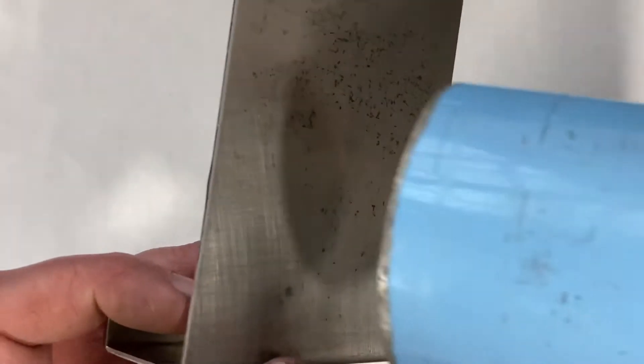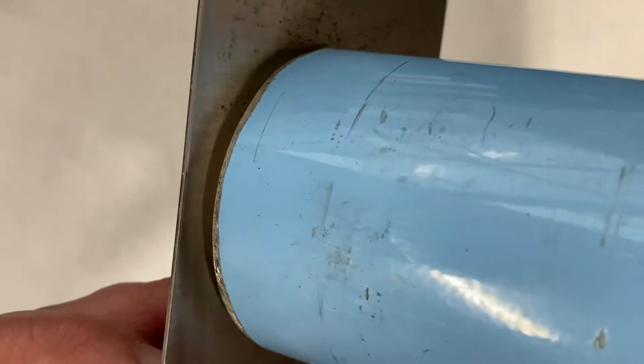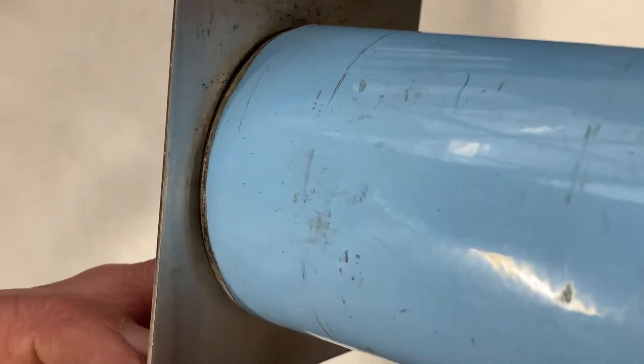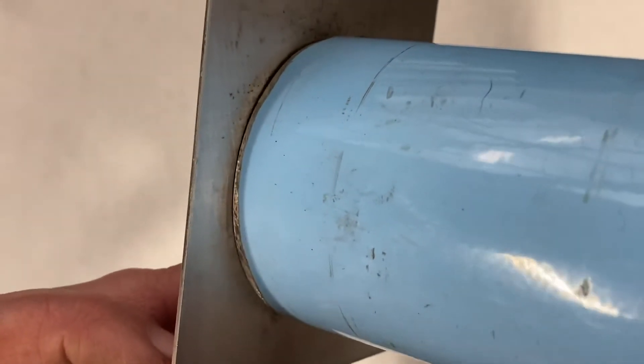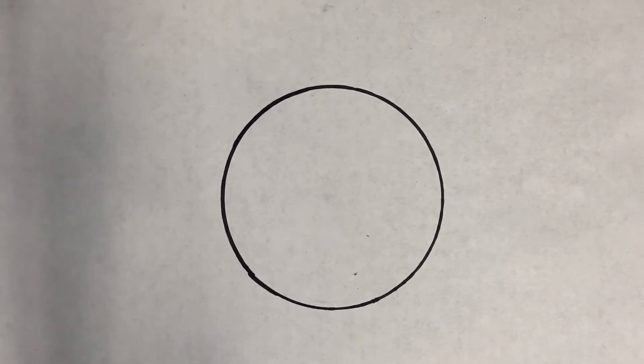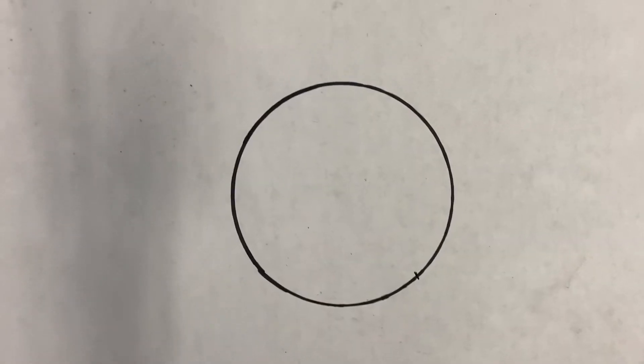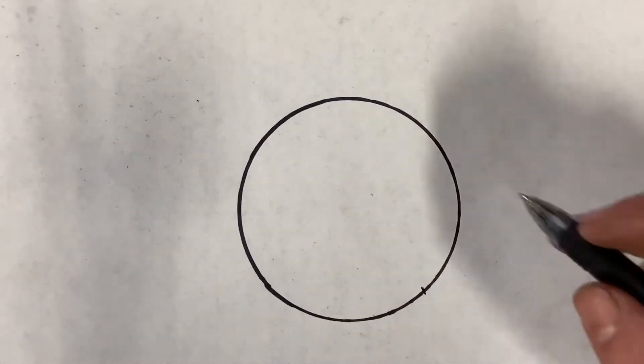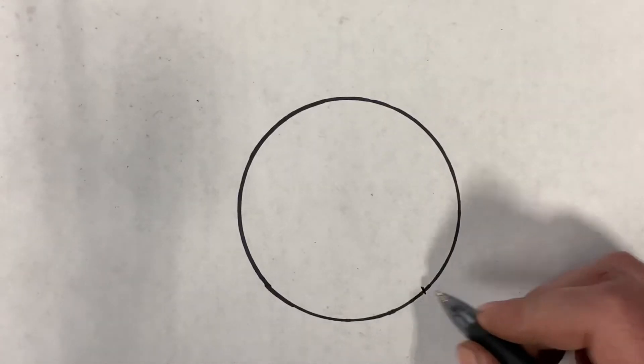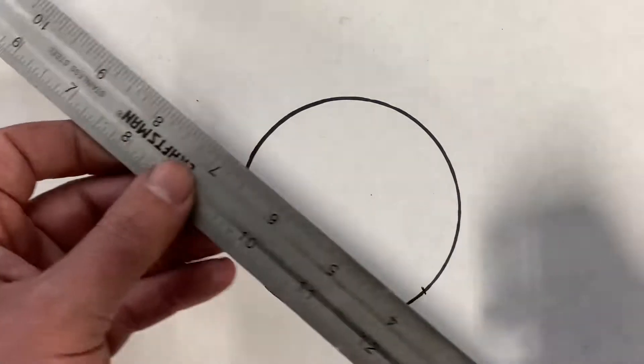Now your first step would be to trace the circle onto your flat surface that you plan on cutting through. For demonstration purposes, we threw a circle on this piece of paper here. Now for this technique, you want to just pick a spot somewhere in the circumference of the circle. So I picked this spot right here. That's where I'm going to start my measurements.